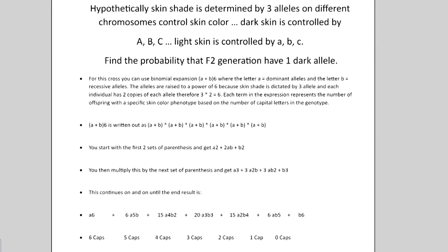An individual whose phenotype contains any three dark or any three light skin alleles will be the same as any other with the same count. For example, a genotype with three dark and three light alleles will have the same skin shade as someone else with three light and three dark alleles, even if they're on different locations. The skin shade depends on how many capital letters you have, which is dominant, and how many lowercase letters you have, which is recessive.